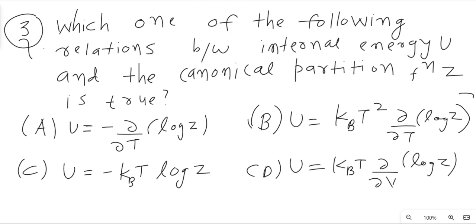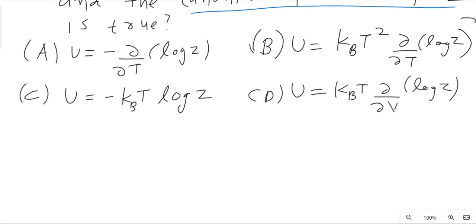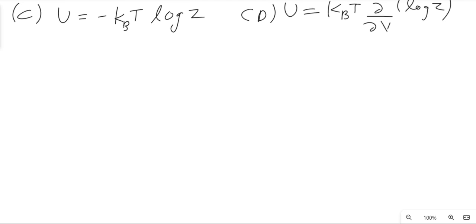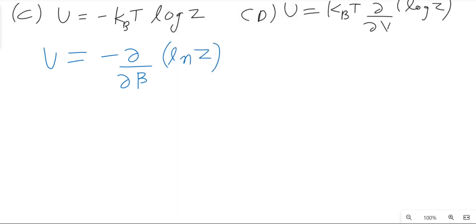The third question is from statistical mechanics: which relation between internal energy U and the canonical partition function Z is true? Please remember this formula — internal energy is U = −∂(ln Z)/∂β, where Z is the partition function and β = 1/kT.